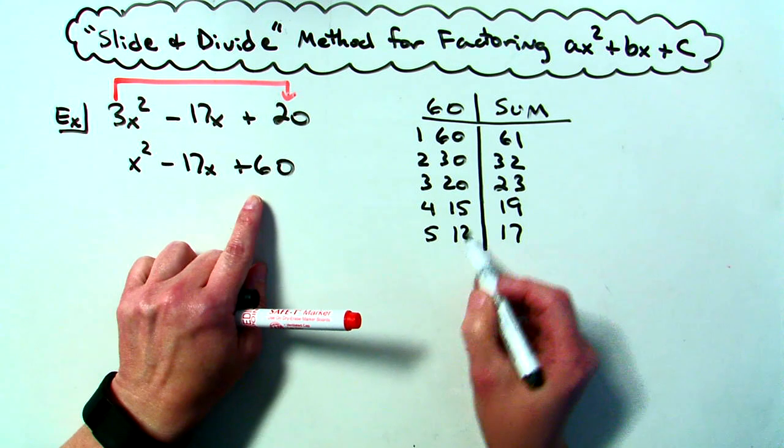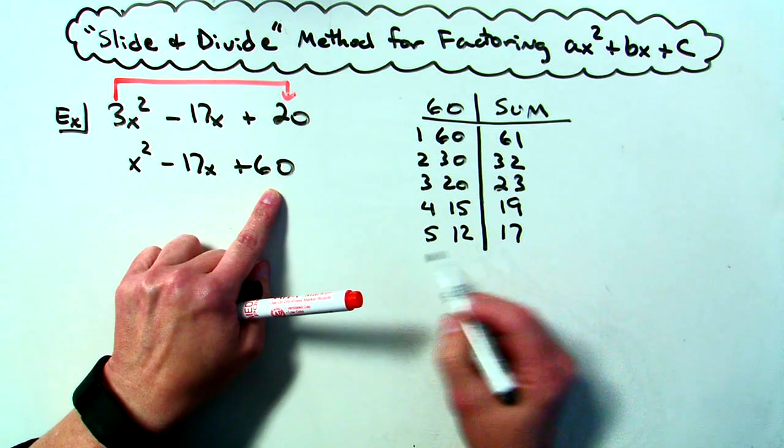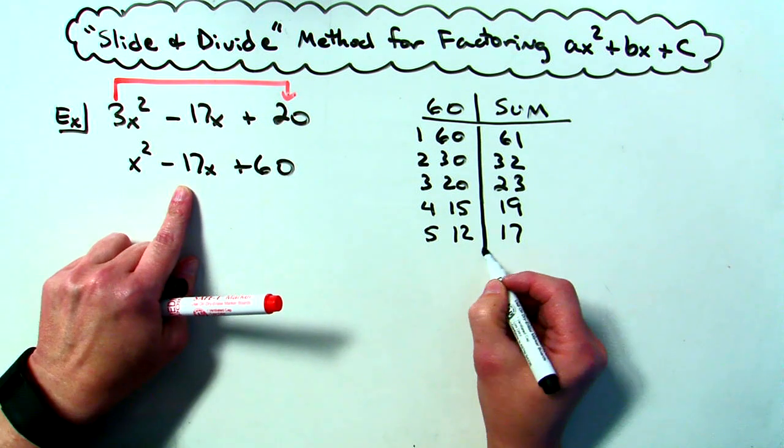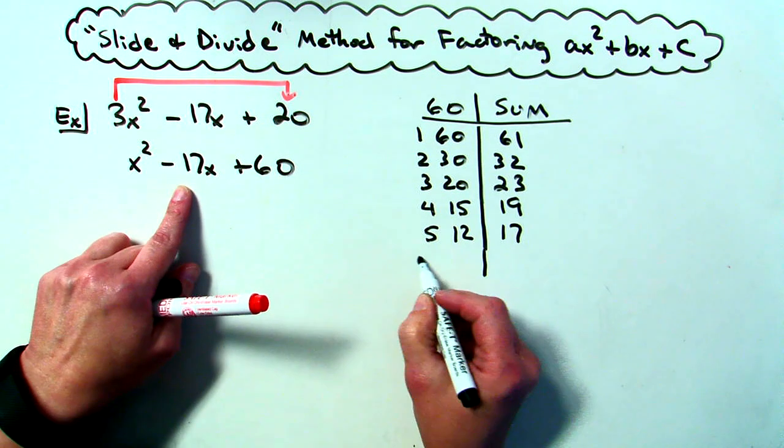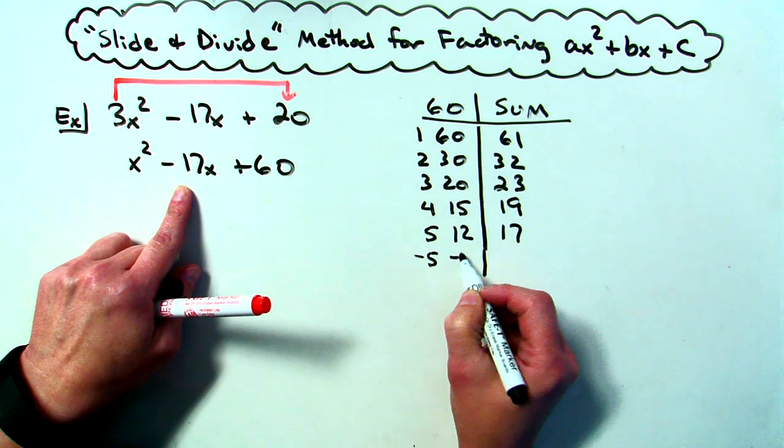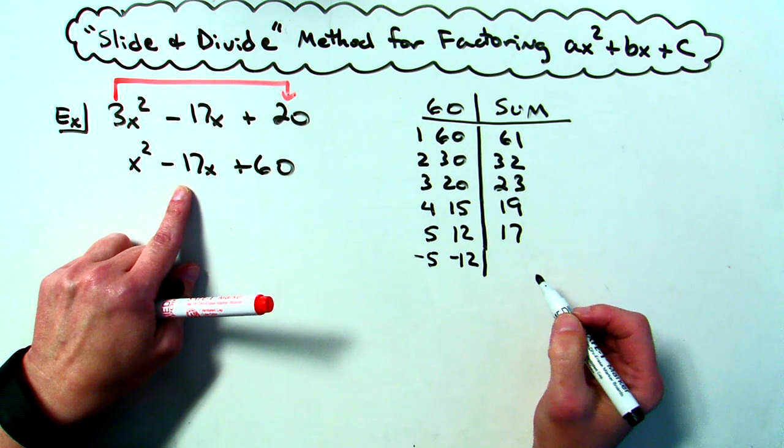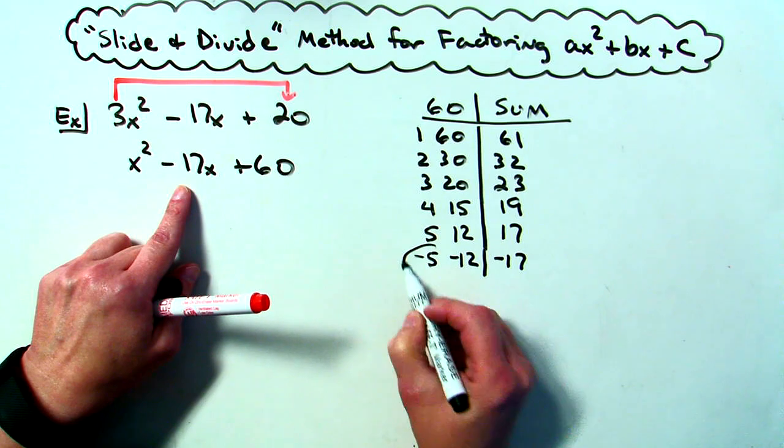When I do 5 times 12 that does give me a positive 60. But when I add I get a positive 17 I need a negative 17. So then my other alternative would be to go negative 5 times negative 12. That still gives me my positive 60 and now when I add I get the negative 17.